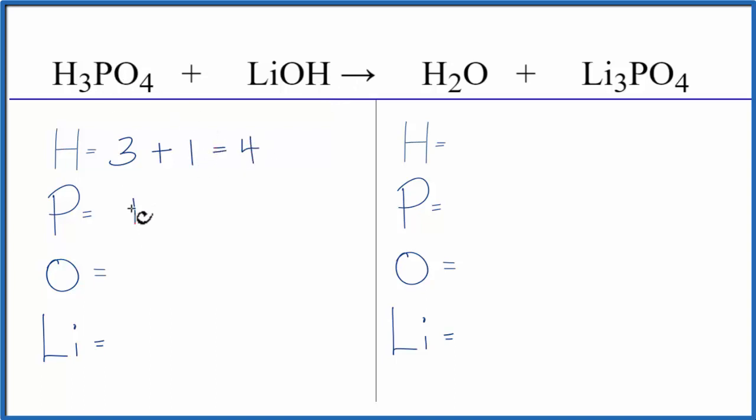We have one phosphorus, four oxygens, plus we have an oxygen over here. So that gives us five oxygen atoms, and then one lithium.